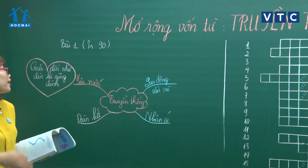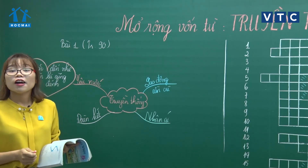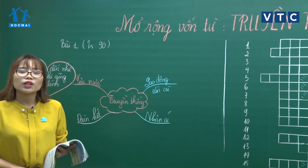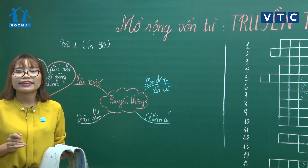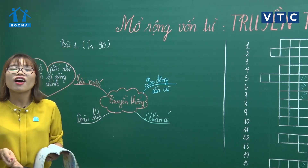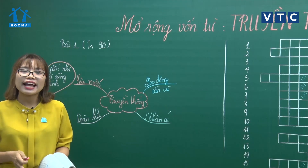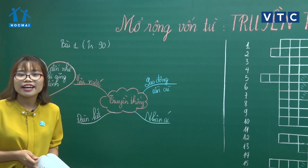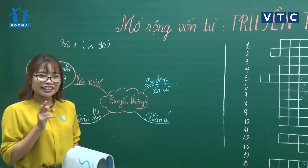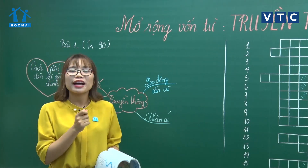Yêu nước còn là nỗi nhớ về quê hương: 'Anh đi anh nhớ quê nhà, nhớ canh rau muống, nhớ cà dầm tương. Nhớ ai dãi nắng dầm sương, nhớ ai tắm nước bên đường hôm nào.' Có rất nhiều câu hay, về nhà tìm thêm. Nếu các con hỏi ông bà bố mẹ thì sẽ có rất nhiều những câu ca dao tục ngữ thú vị.